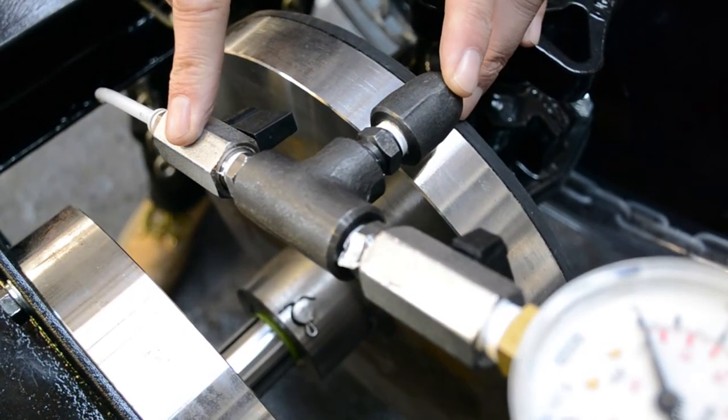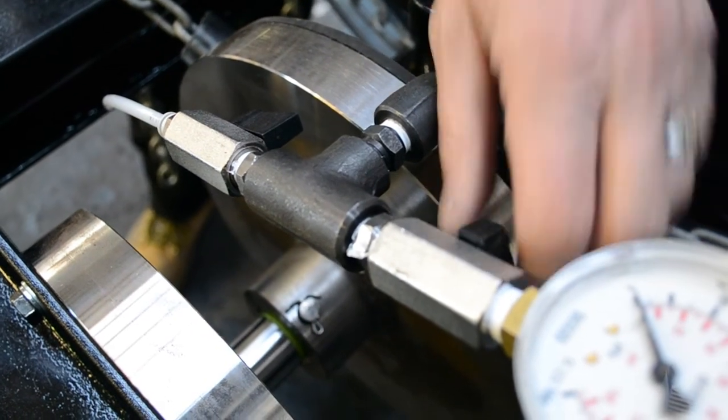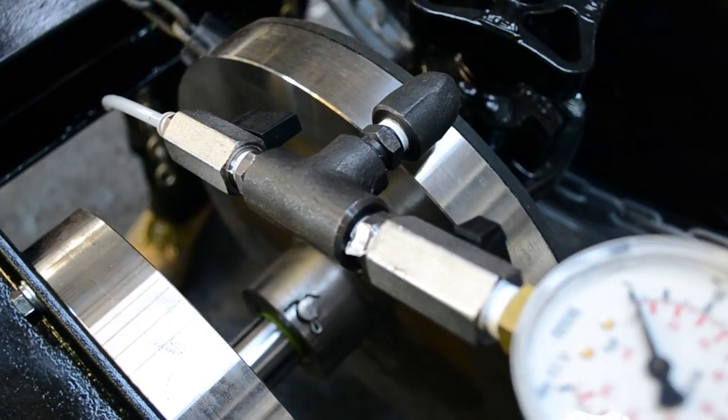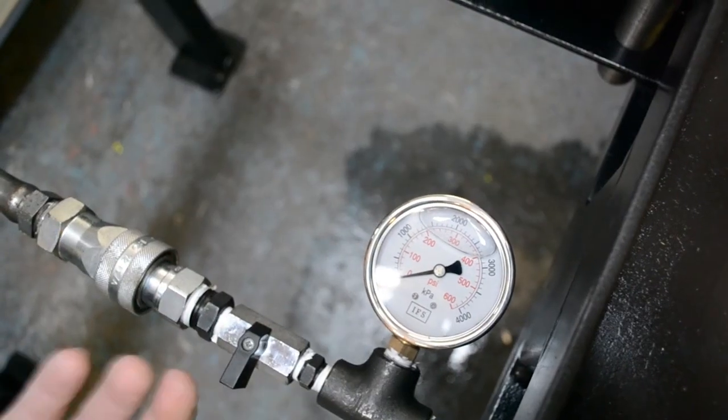Now open the valve to the outlet drainage line and close the valve to the outlet gauge. Open the inlet pressure gauge valve.